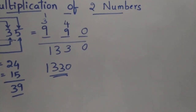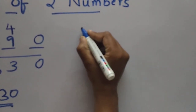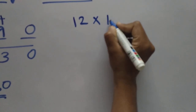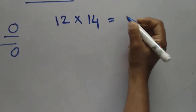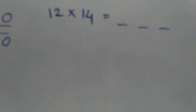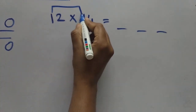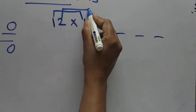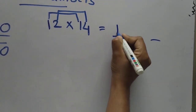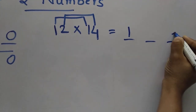And we can move to one more example — that is 12 into 14. First we can take 3 blanks here, and after that we can multiply 1 with 1 and 2 with 4. 1 into 1 is 1 here. 2 into 4 — take 8 here.